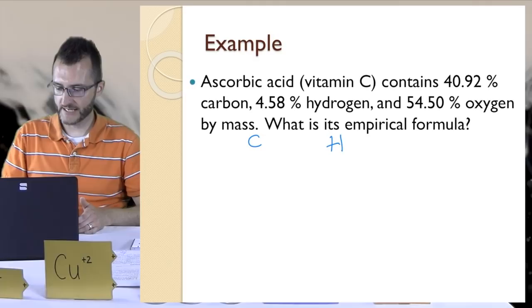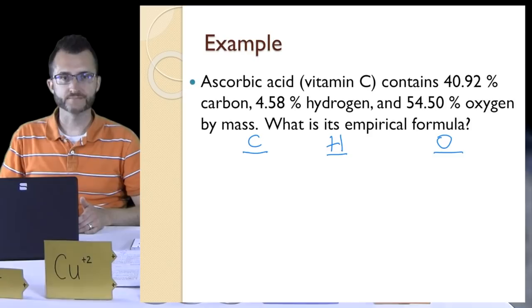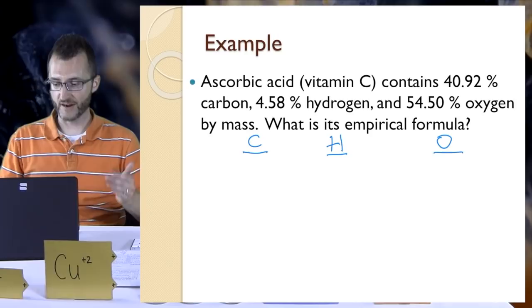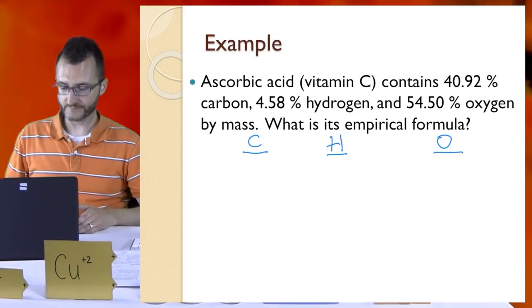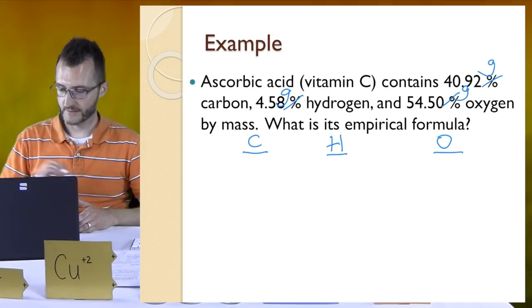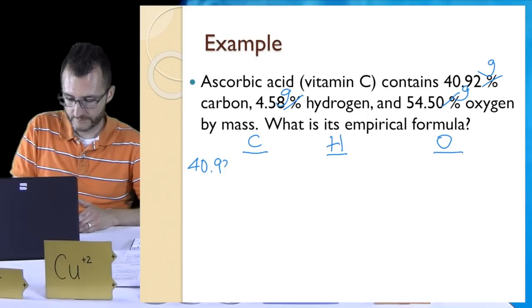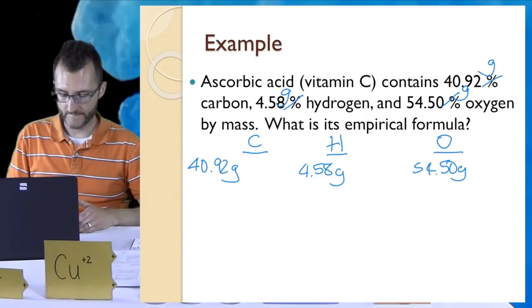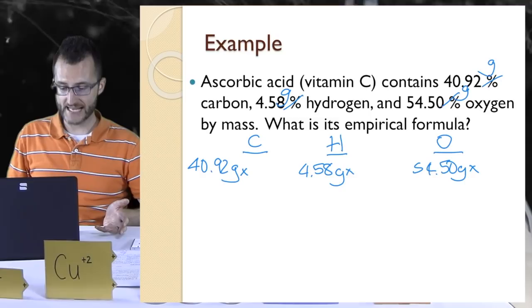They give us percentages, but we need to do mole conversions. In order to do mole conversions, we need mass. I think we have to assume that it's a 100 gram sample, because then all of our percents, which are out of 100, would just be in grams now. It makes that conversion easier by assuming 100 grams. So let's change those percent signs to grams for each of those elements. Now we're leaving a little space here because we know we have to convert these into moles.